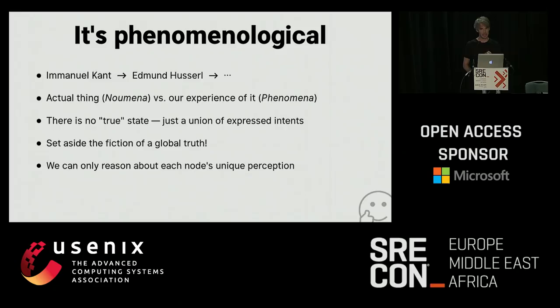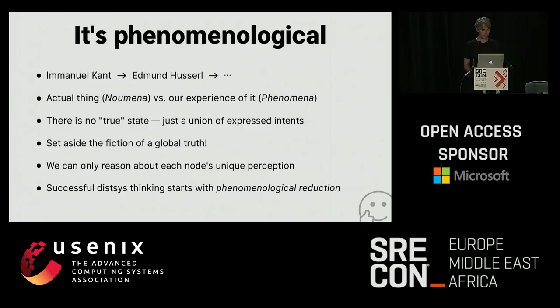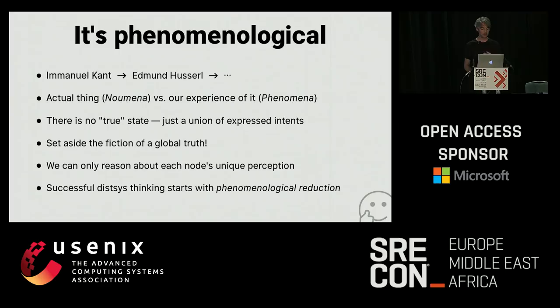We can only reason about each node's unique perception, and if we understand that intuitively, we can build more robust distributed systems. Successful thinking in this realm starts with phenomenological reduction — understanding that we don't have direct access to reality, only the contents of our minds. It's like we're stuck in Plato's cave, and we can only understand truth as its shadow projection on the wall. We're stuck in this von Neumann architecture, and we can only understand the abstract global system state by its representation in our local memory.